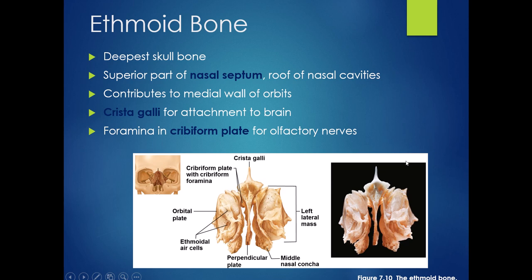The ethmoid bone sits kind of above the nasal cavity, making up the area behind the nose. The perpendicular plate makes up the superior part of your nasal septum, separating the nasal cavity into right and left. The lateral masses form the medial walls of the orbits. The crista galli — meaning 'cock's comb' — is this little point sticking up, and this is where your brain actually attaches to your skull. On either side of the crista galli is the cribriform plate, which has lots of tiny foramina for all of your olfactory nerves so that you can smell.